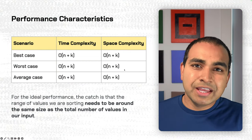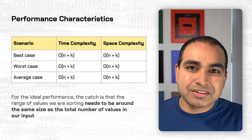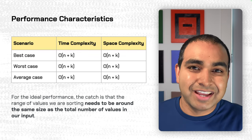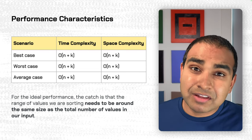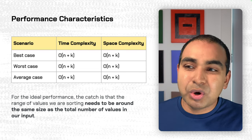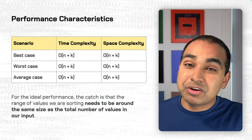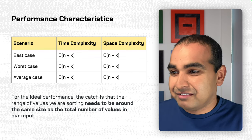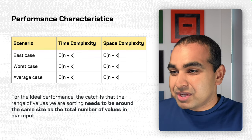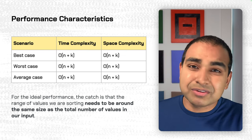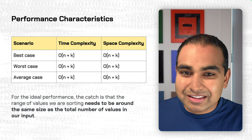Completing this process gives us the final sorted output: zero, zero, one, one, two, two, three, four, four, five, and seven. Now let's talk about performance. The time complexity and space complexity for counting sort are both O(n + k). The value of k is very different depending on the input, and the ideal performance requires that the range of values be on the same order of magnitude as the total number of input values.